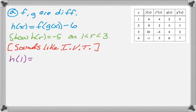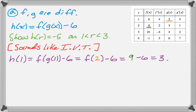so, let's figure out the values of the bounds, because that's usually what you do. That's going to be f of g of 1 minus 6, which is, now look up g of 1 in the table, and you see it's 2, so that's f of 2, and then minus 6. And then look up f of 2 in the table, and it's 9, so 9 minus 6, which is 3.